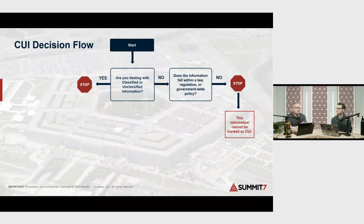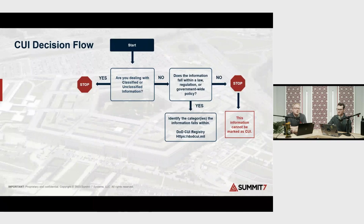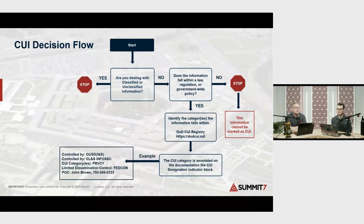It's really important to have a firm understanding of what CUI is — one of our speakers at CS2 is going to do a deep dive into this particular topic. If the information does have a law, regulation, or government-wide policy, look up those categories in the National Archives or the DoD CUI registry. Go look up the category and the safeguarding requirements and try to understand if it's actually going to be CUI. The CUI category should be annotated on the document in the CUI designation indicator block — meaning the CUI should be properly marked. There are different requirements around marking, dissemination controls like no-foreign, and basic versus specified CUI.